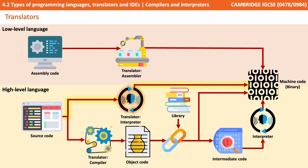With high-level languages the situation is a little more complex. On the left we have our source code which can be written in any one of hundreds of different high-level languages. One option is for this code to be translated via an interpreter. It goes straight from the source code through the interpreter and then gets translated directly into machine code.